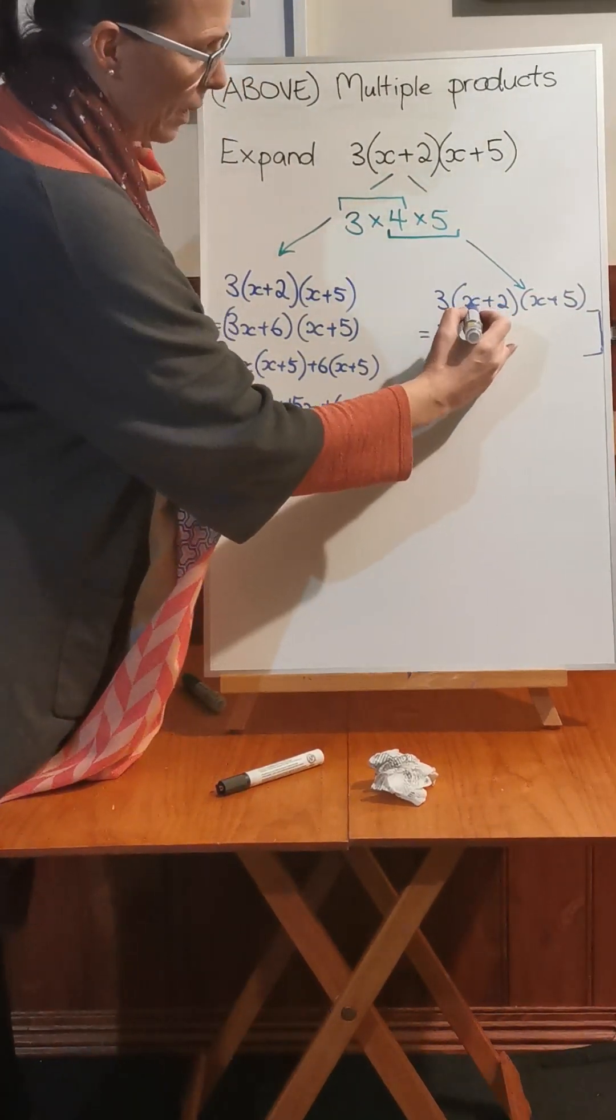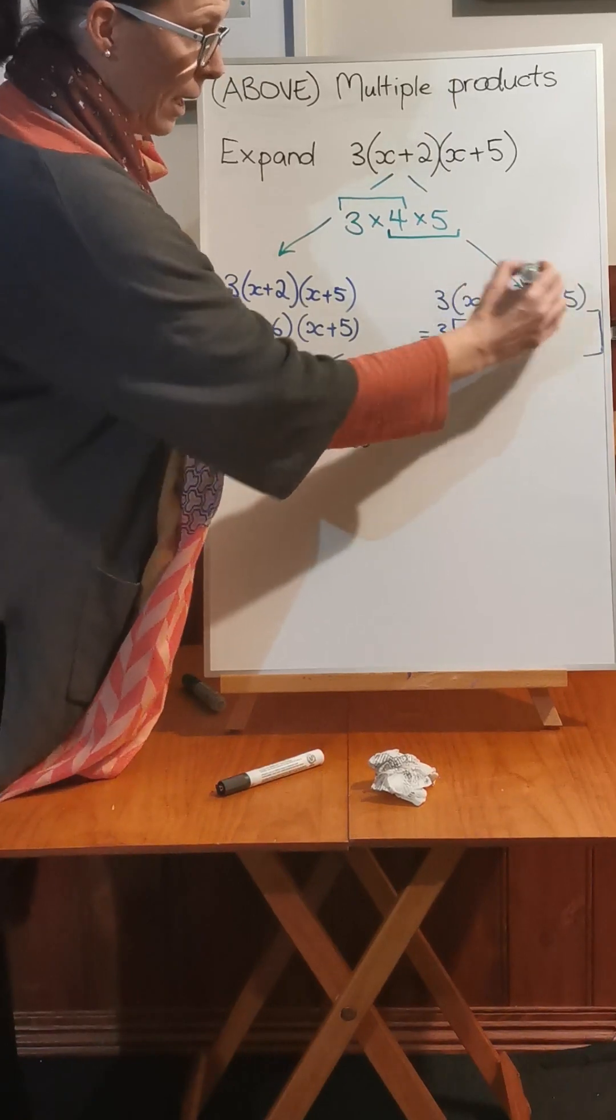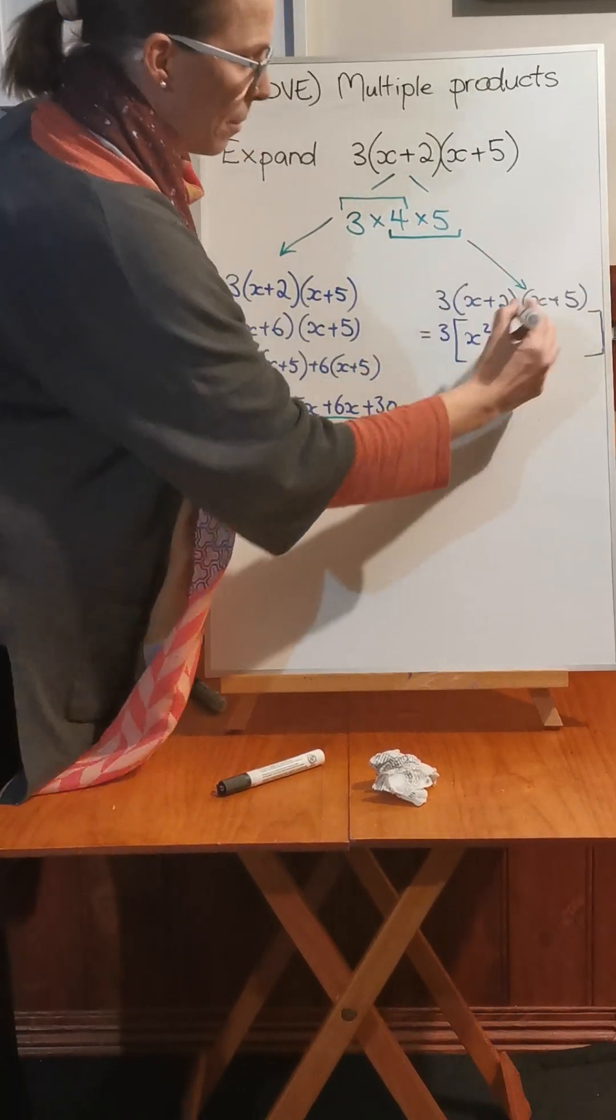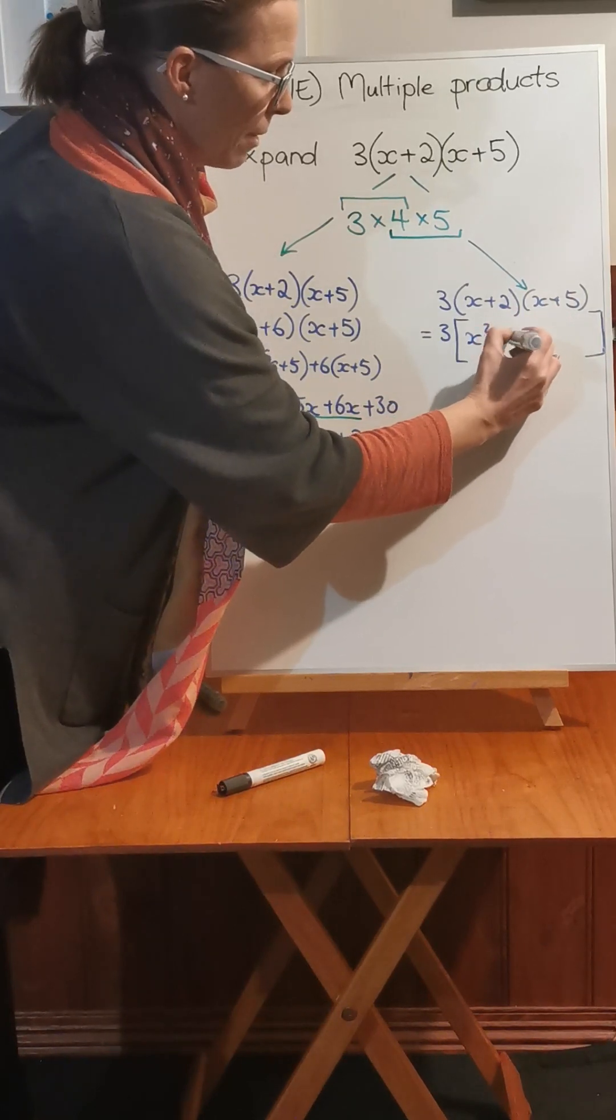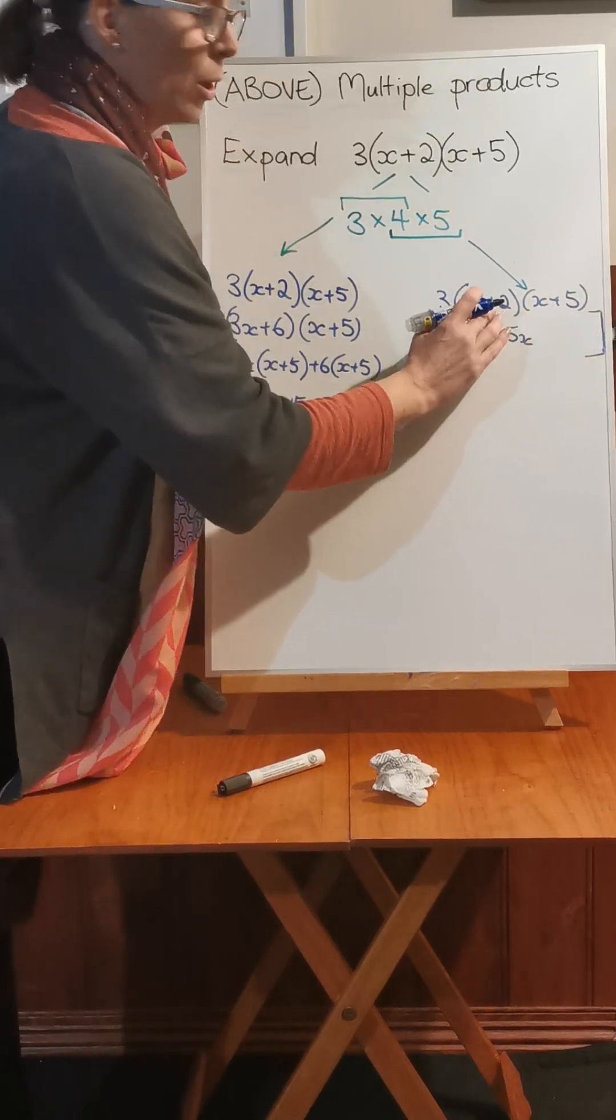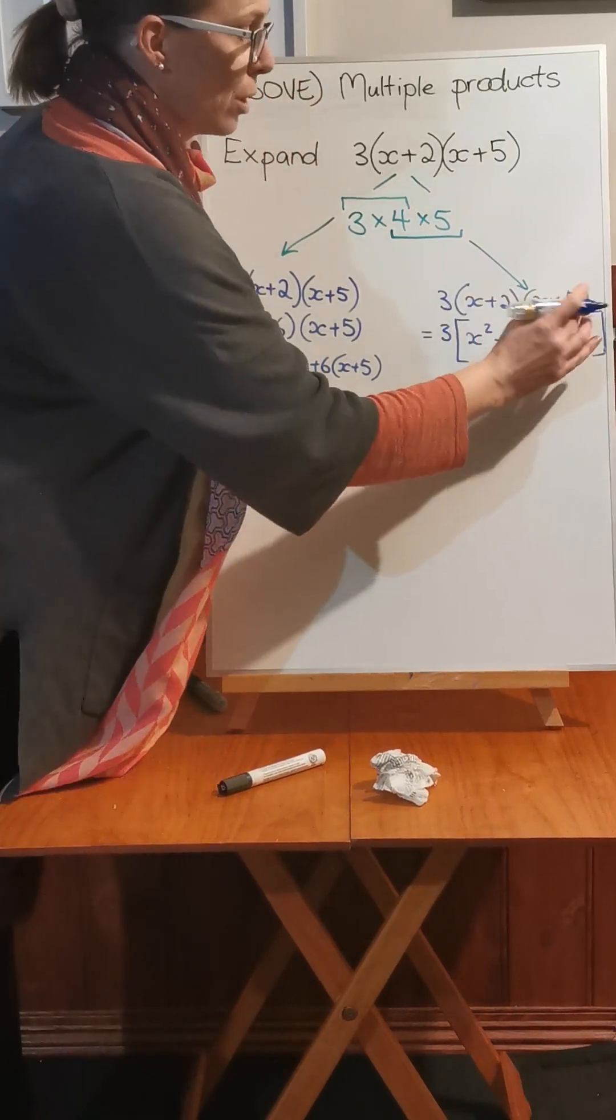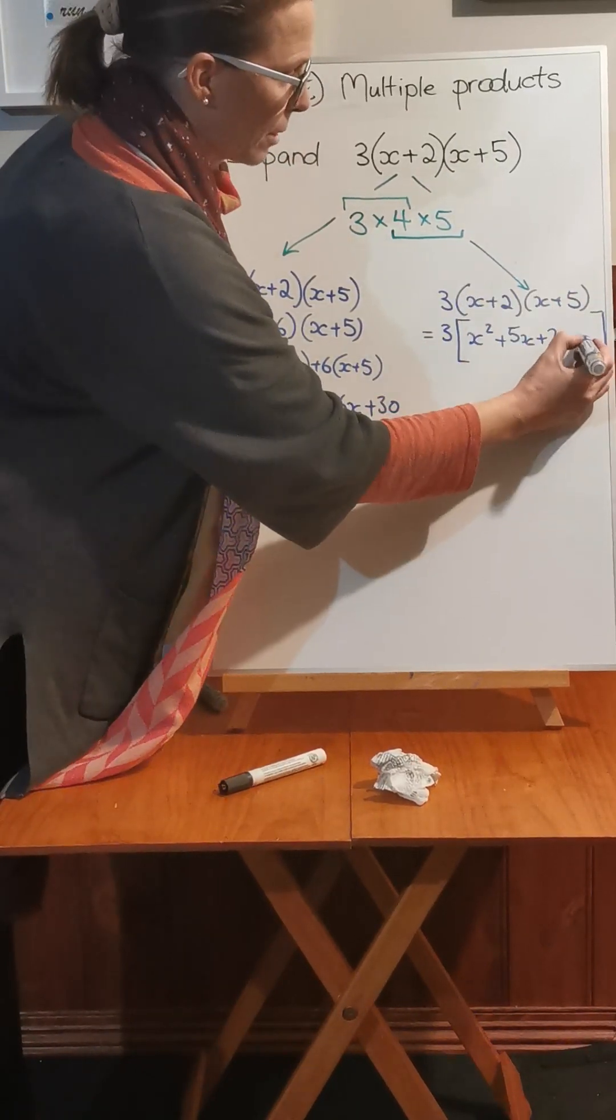So I have x times x which is x squared, x times positive 5 which is 5x, 2 times x which is 2x, and 2 times 5, both positive makes positive 10.